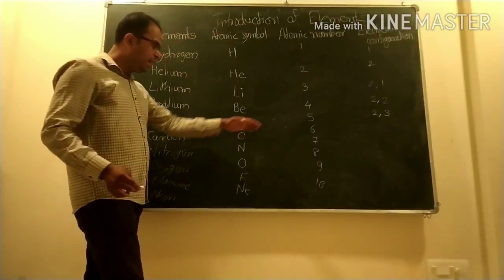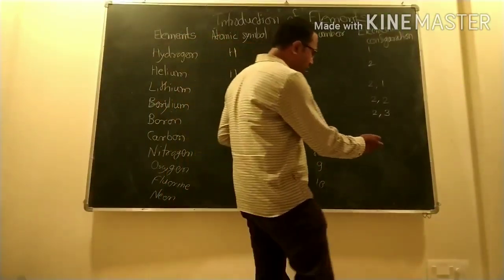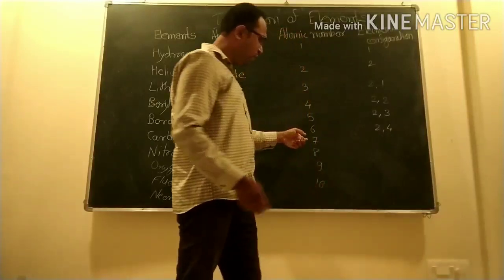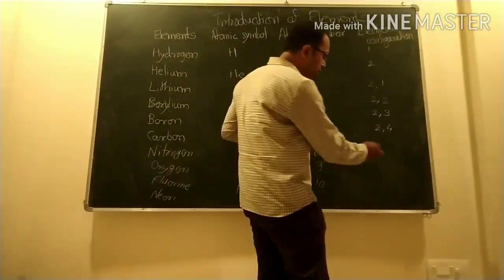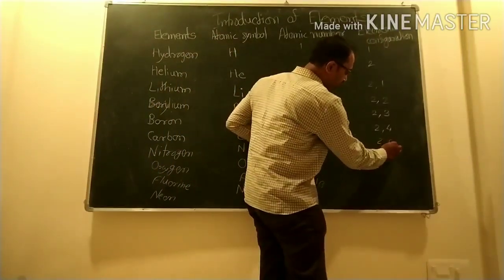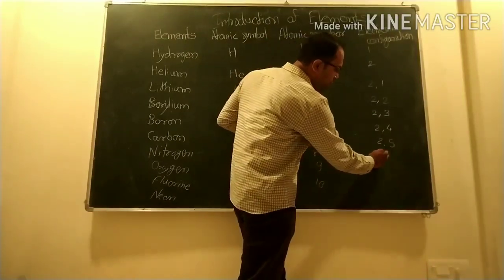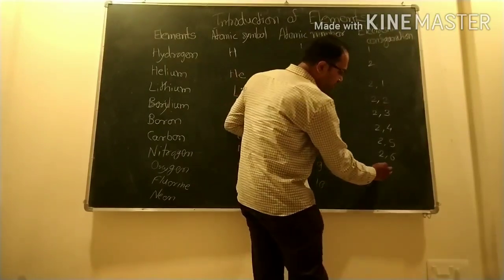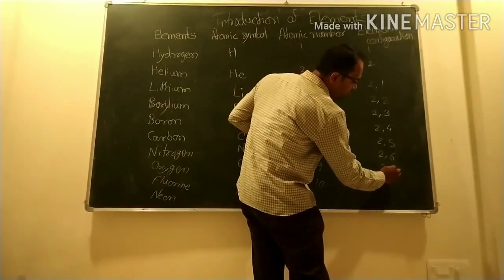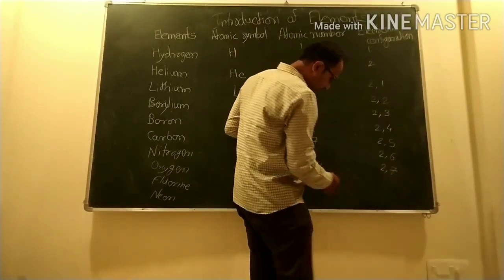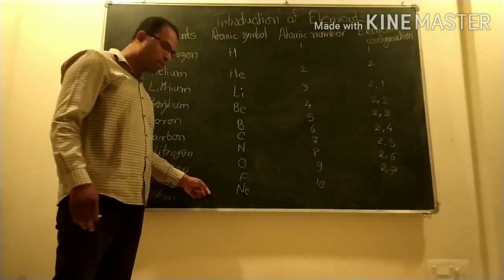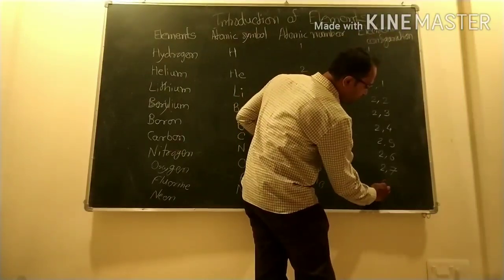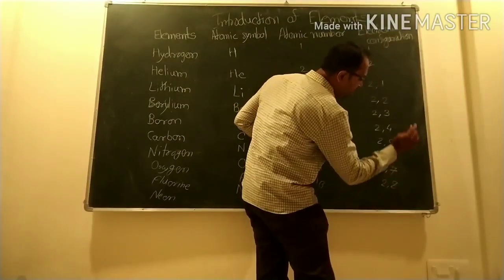For Carbon, atomic number 6, electronic configuration is 2, 4. For Nitrogen, 2, 5. For Oxygen, 2, 6. For Fluorine, 2, 7. For Neon, atomic number 10, electronic configuration is 2, 8.